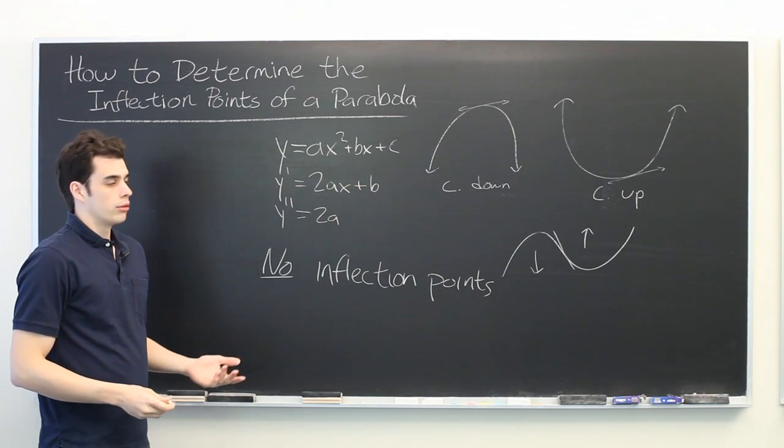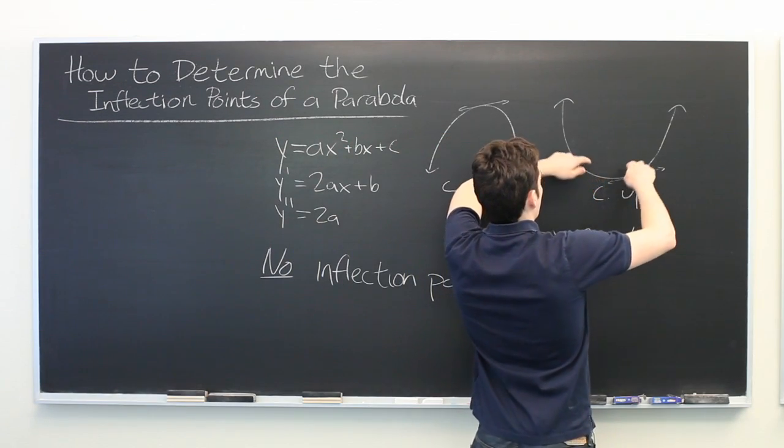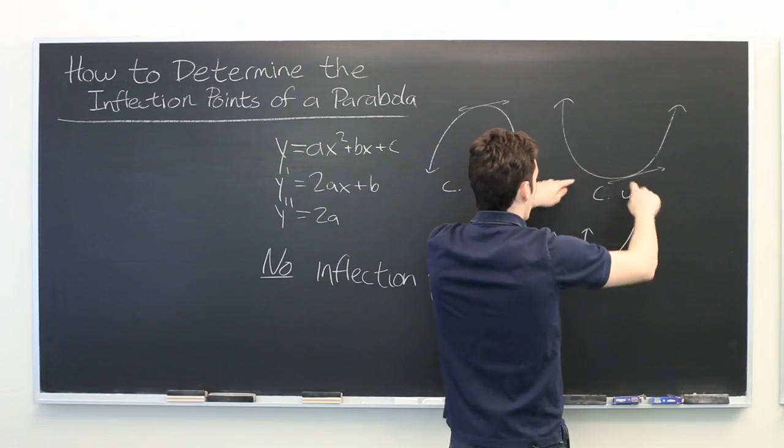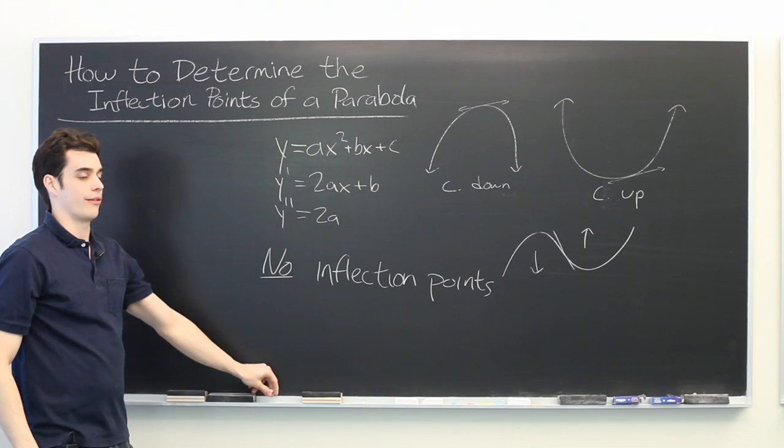And this result should agree with our intuitive notion of what a parabola looks like. It starts at a vertex and either continues going upwards or continues going downwards in both directions. And its concavity never changes.